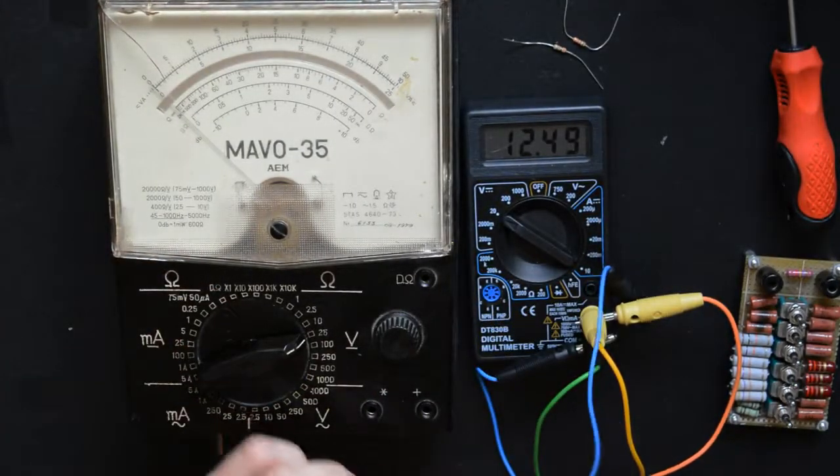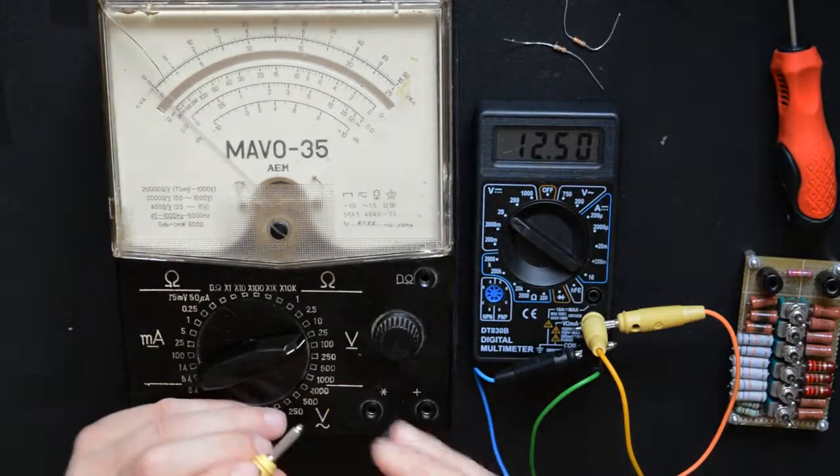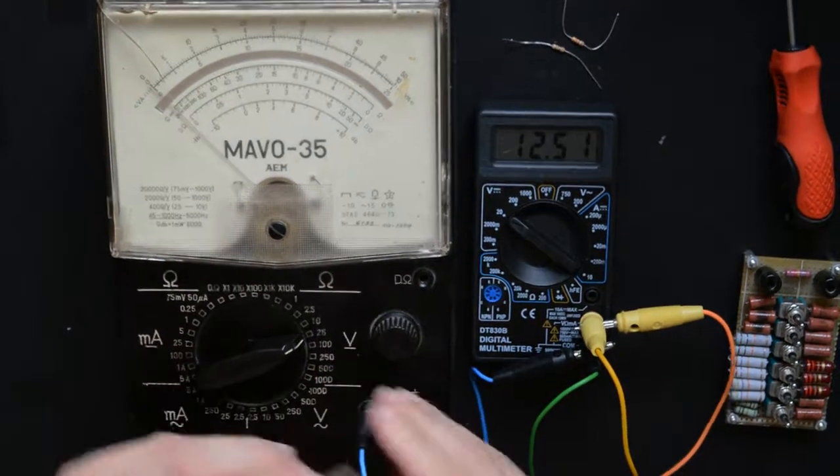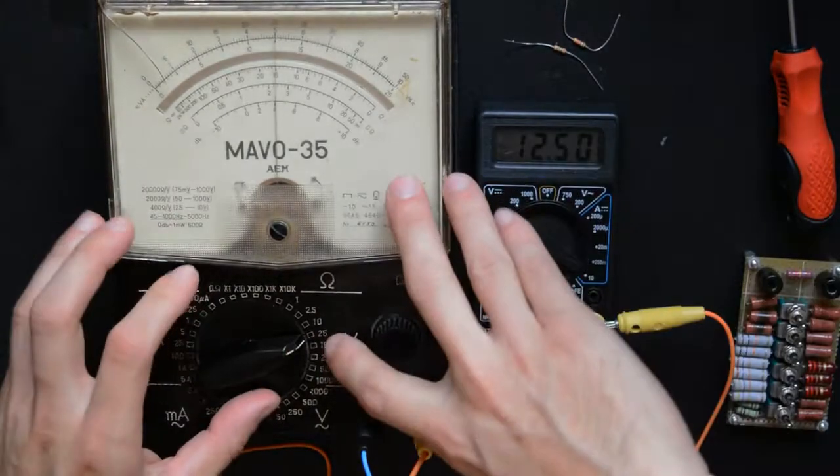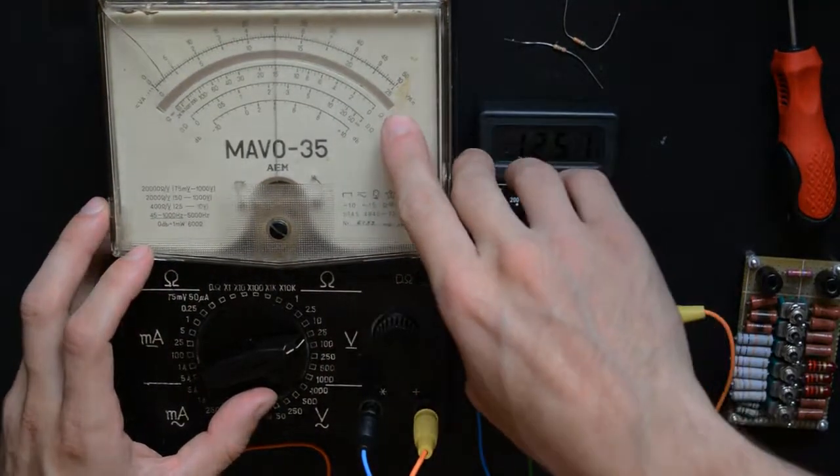The closest scale which I have to the 12.5 volts that I want to measure is the 25 scale. So I will be plugging now the voltage into the multimeter. And as we can see,